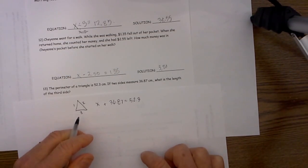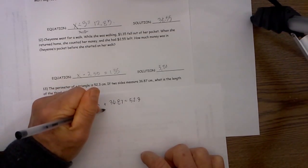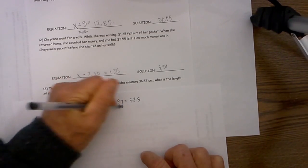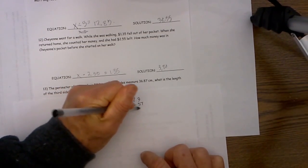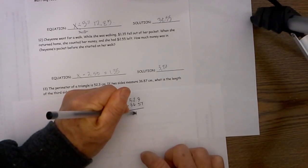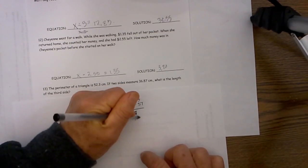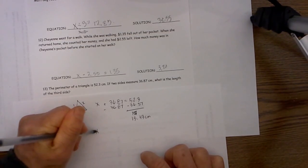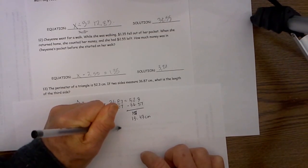We know that now we just solved for the one-step equation. To get rid of the 36.87 we will subtract both sides. So we have 36.87 on this side and we will do the same on the other side. When you subtract those two that is 15.43 cm. So therefore the length of x is equal to 15.43 cm.